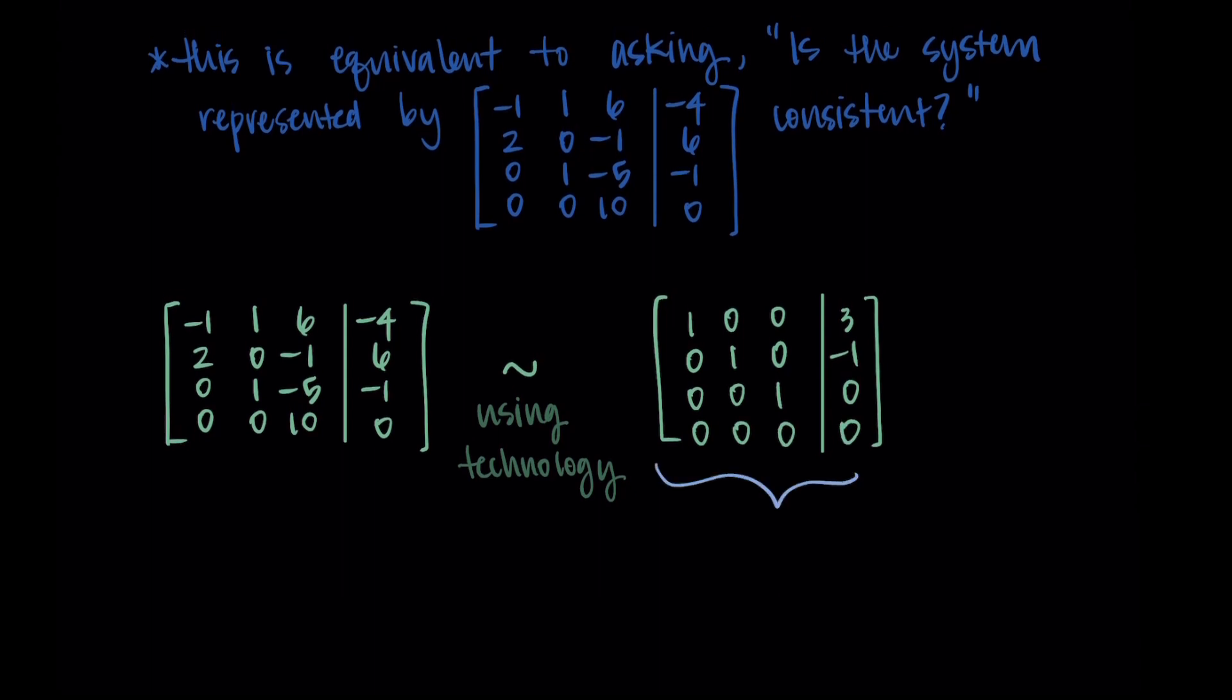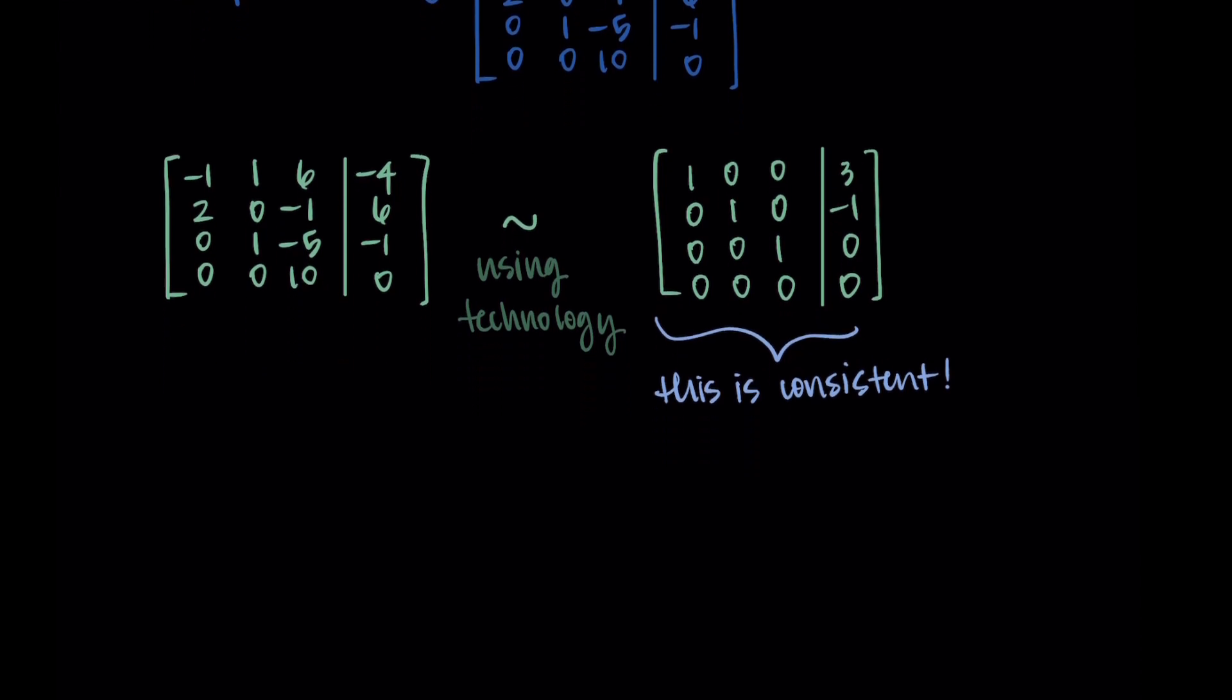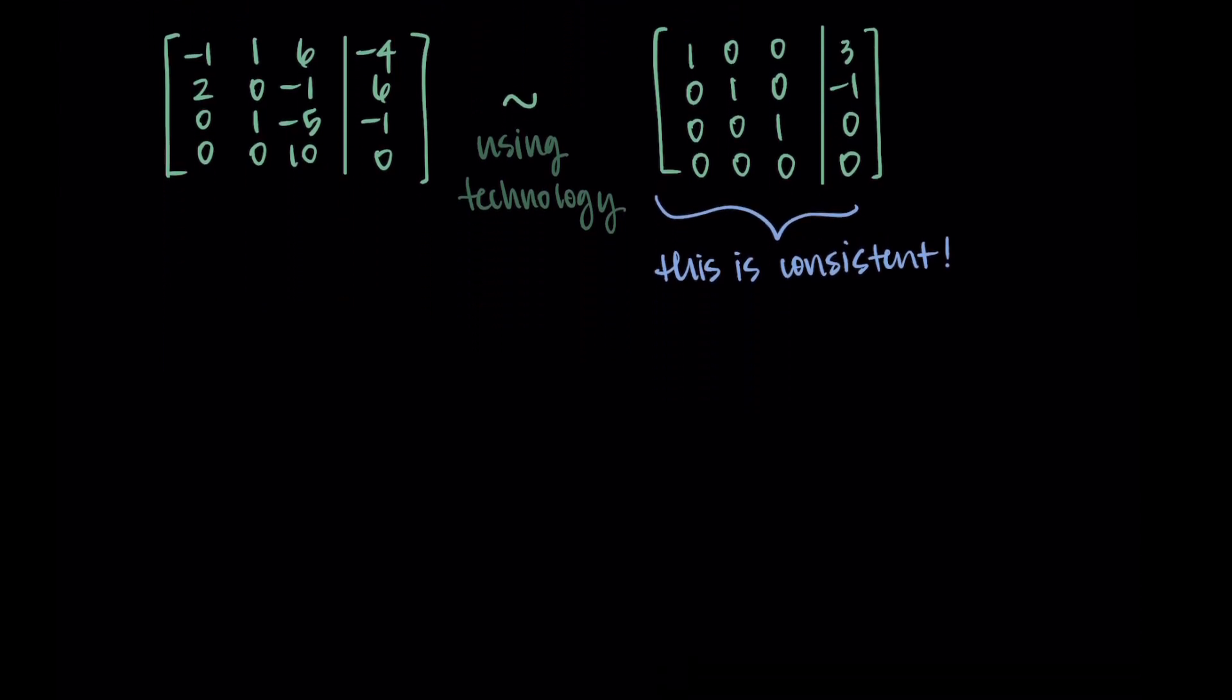So this system is consistent. I'm not seeing any false statements presenting themselves. We don't see anything like zeros on the left-hand side and a nonzero value on the right-hand side. And so this is a consistent system. So by determining this is consistent, we now can say that we can write b as a linear combination of the vectors. Let's find the weights that make that true.